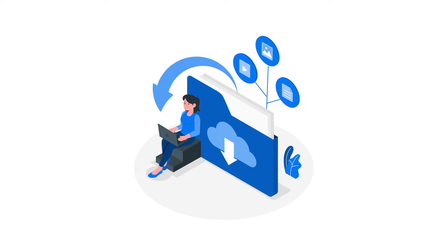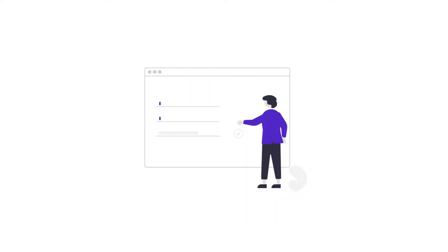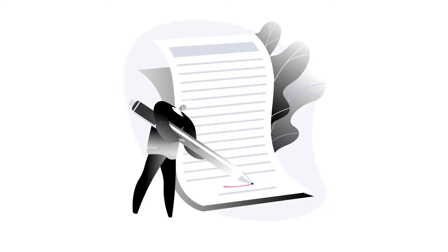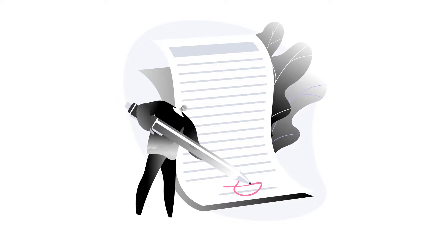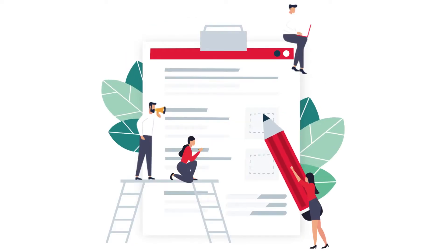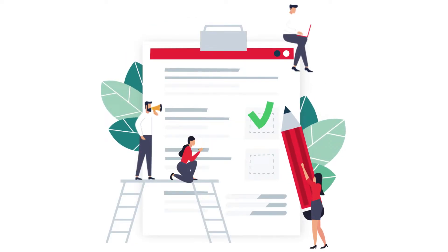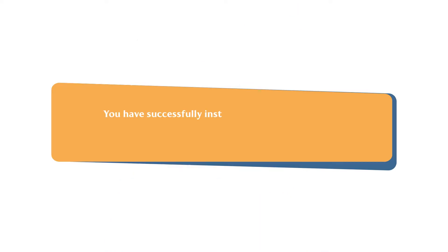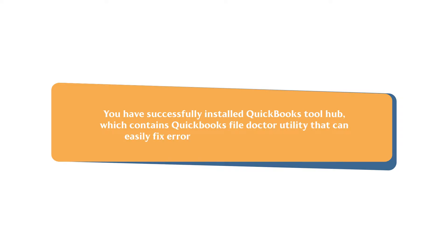First, you need to download the setup for QuickBooks Tool Hub from the link provided in the description. Then, launch the setup by double-clicking on it. To proceed, accept the terms and agreements. Then, follow the on-screen instructions to install the tool on your system. You have successfully installed QuickBooks Tool Hub, which contains the QuickBooks File Doctor Utility that can easily fix errors related to the company file.